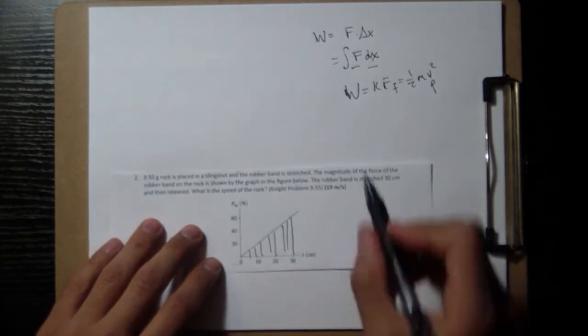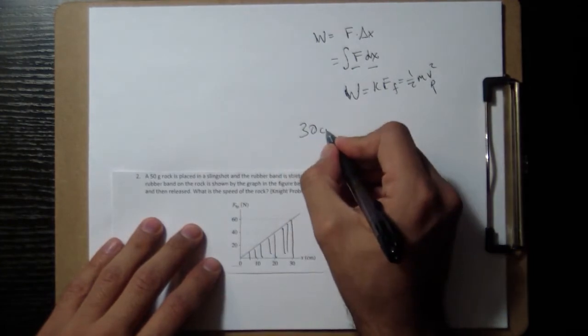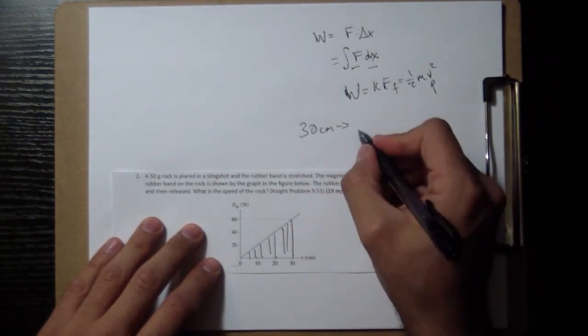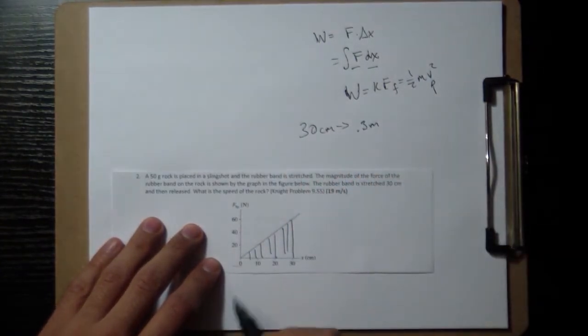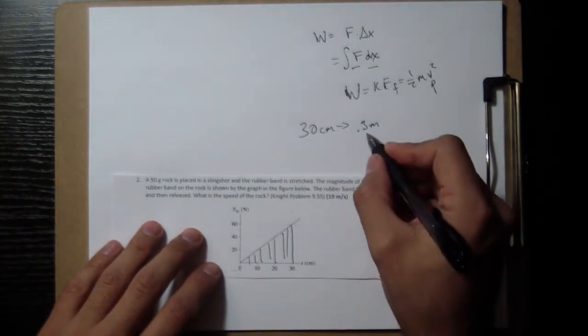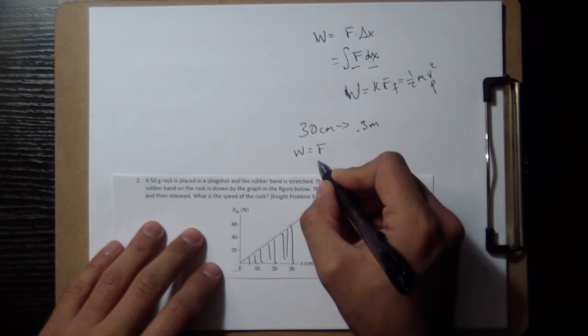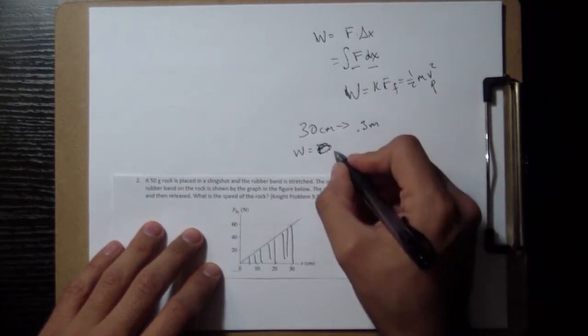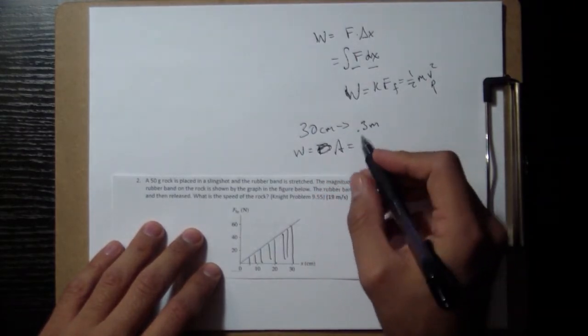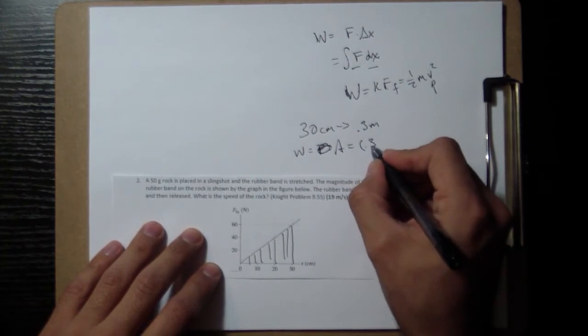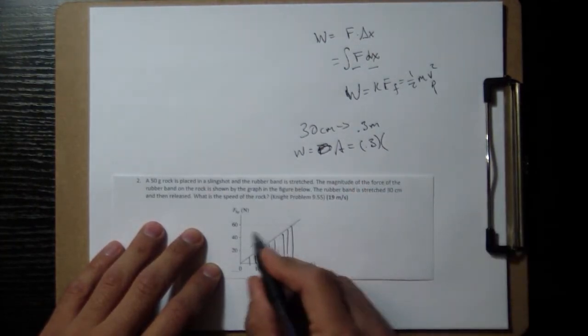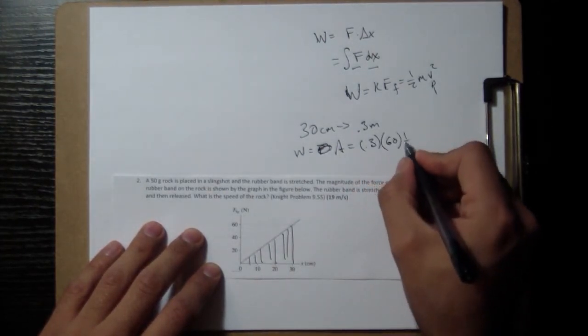Let's convert centimeters to meters, so 30 centimeters is going to be 0.3 meters, and this is in newtons already. So it's going to be the area, which is going to be 0.3 times 60 times 1/2.